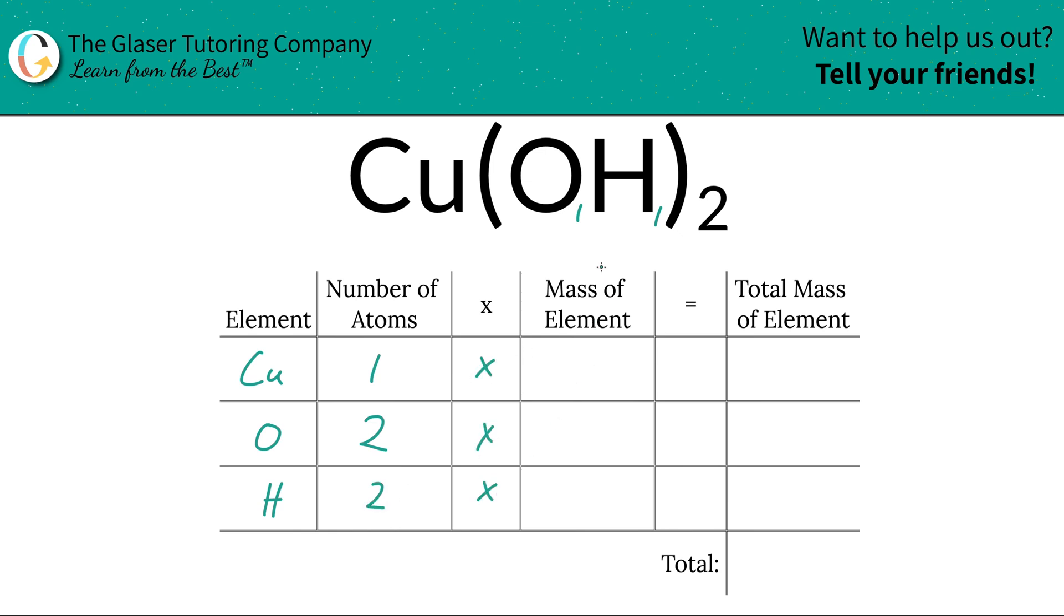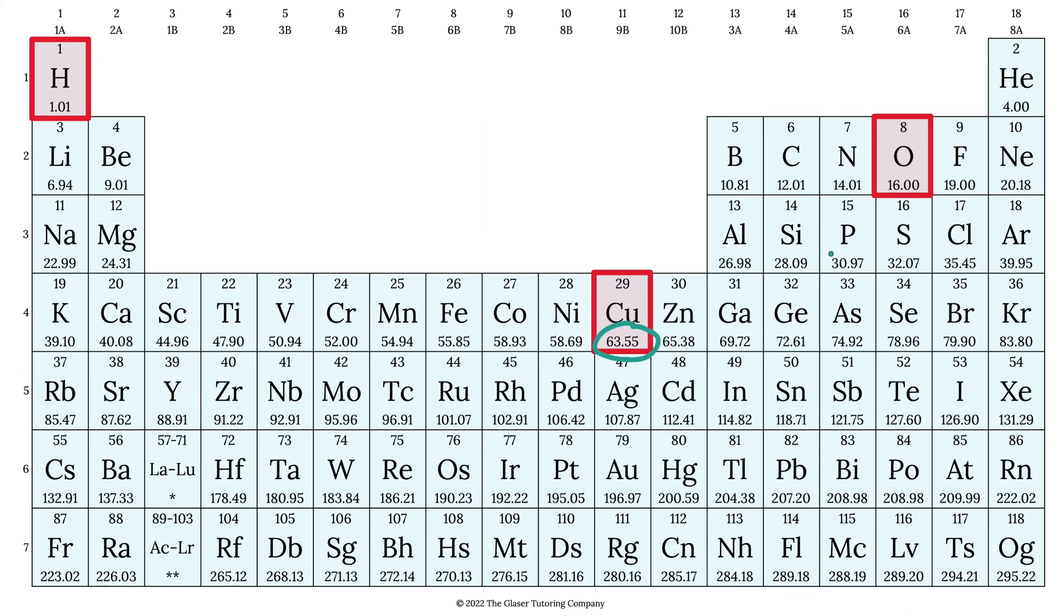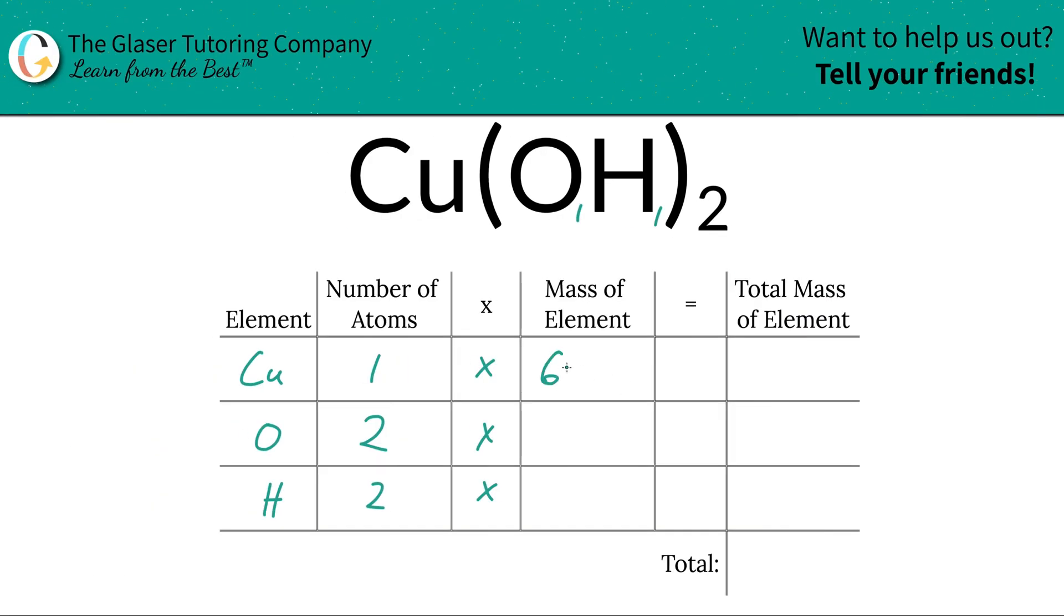Then what we're going to do is take those number of atoms and multiply it by the mass of the element. These masses are found on the periodic table, so let's take a look. Here's copper's mass, 63.55. Oxygen is 16, and hydrogen is 1.01. So those are the values we're going to plug in. So this is 63.55. Oxygen is 16. And hydrogen is 1.01.